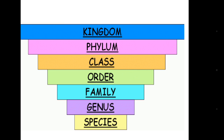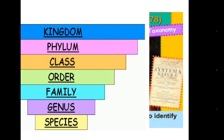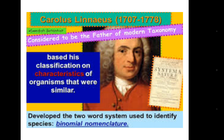These are the seven steps or ranks of the classification system, and you have to write all of them serially — you cannot write Class before Phylum or Family before Order. Kingdom is the highest rank and Species is the lowest rank. This classification system was given by Carolus Linnaeus, who is considered the father of modern taxonomy, based on his classification of living organisms by their characteristics.